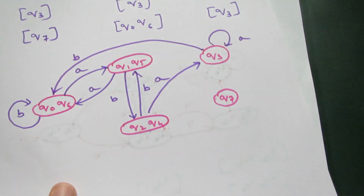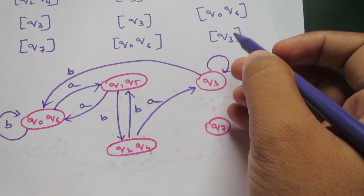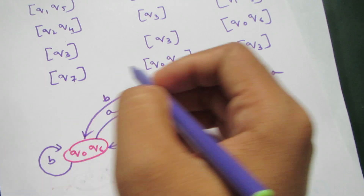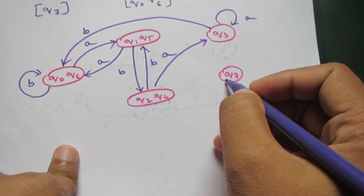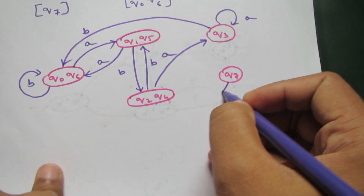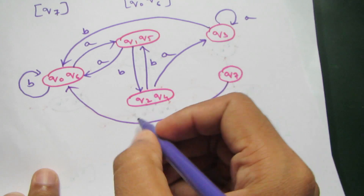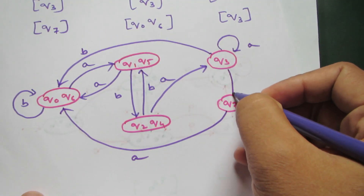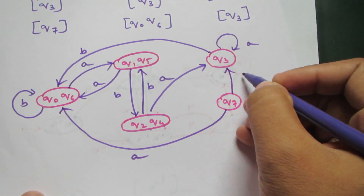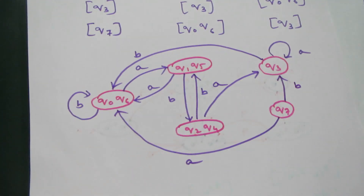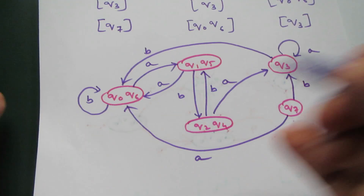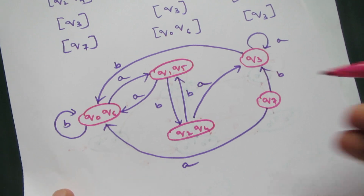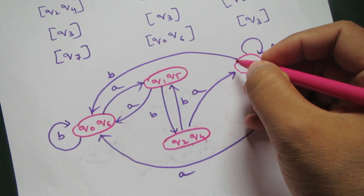Continuing the diagram: q7 goes to q0 q6 on input a and to q3 on input b. This completes our diagram. The final state is q3.